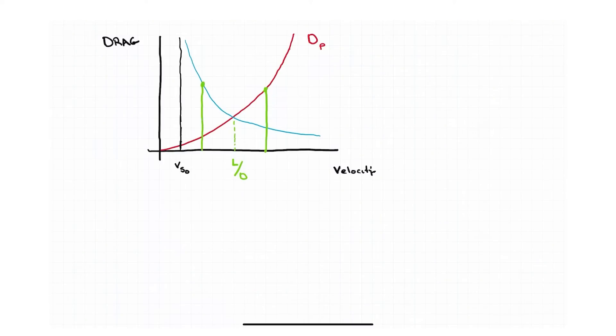But what we do to better see that is we draw a total drag curve. So we'll see how well I can draw this here, drawn freehand. We've got a total drag curve which is these curves added up, and it's going to look something like this. Not exact, but it's enough that you can see and get the point here.